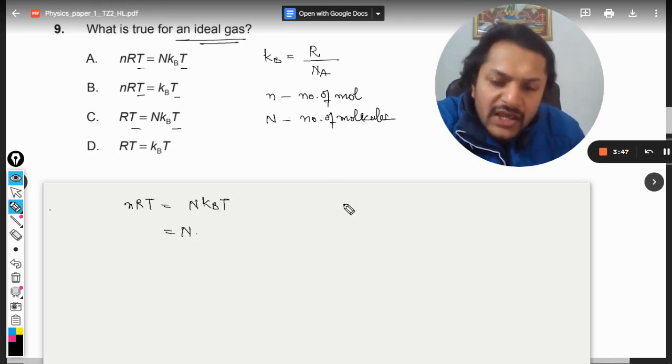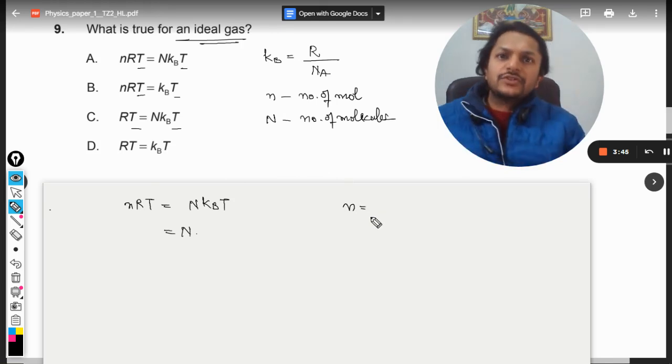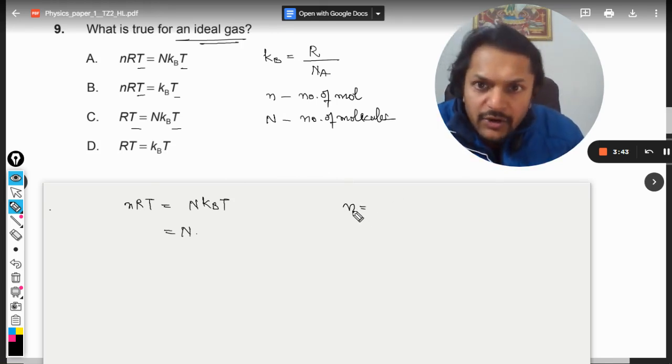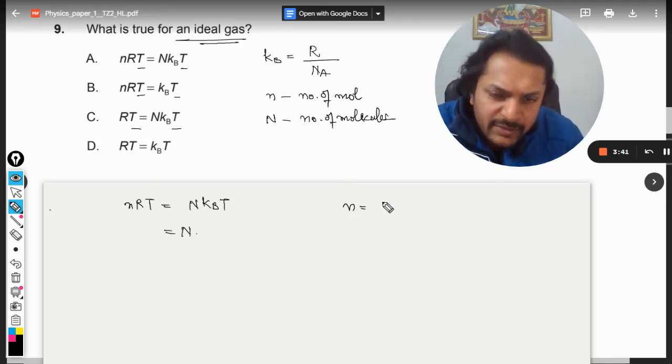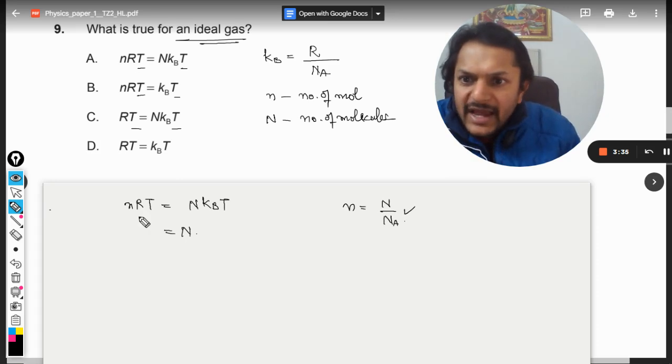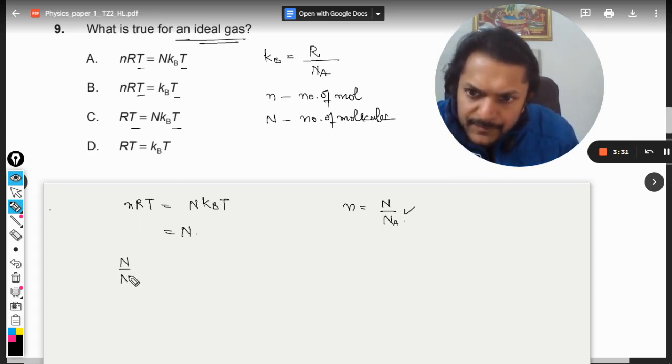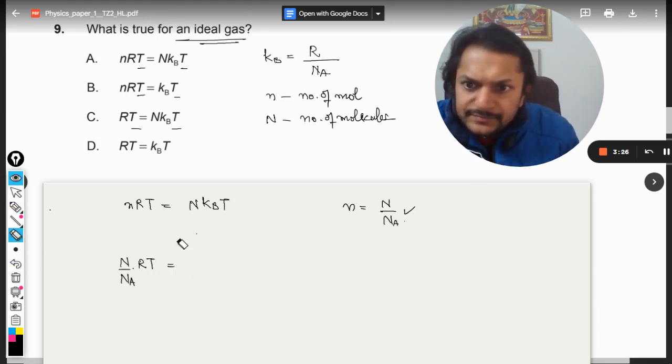Okay, so let us relate the number of moles first of all with the Avogadro number. Number of moles we have to find, so that will be equal to the total number of molecules divided by the Avogadro number. So this is number of moles and we substitute it here: RT. And this is coming out to be capital N into KB.